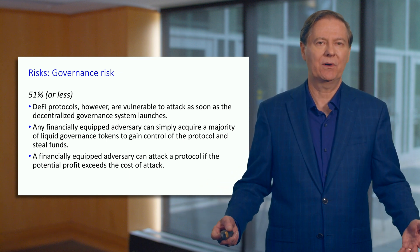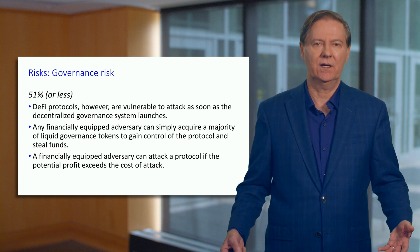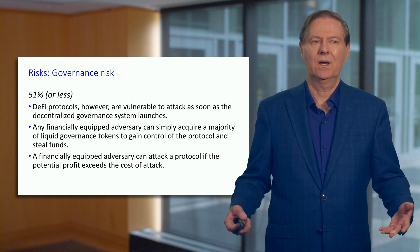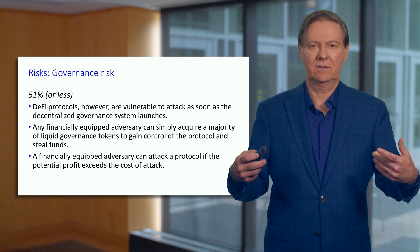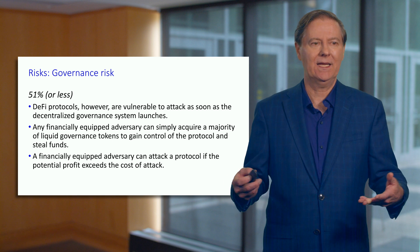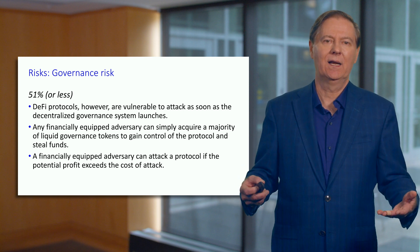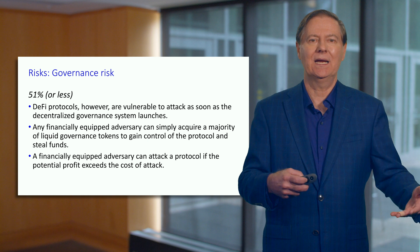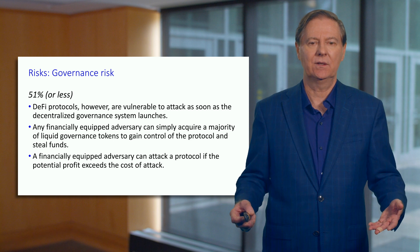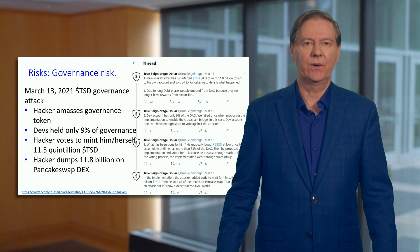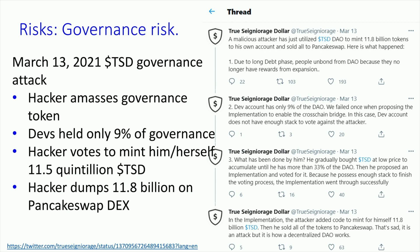For Bitcoin, if somebody grabbed 51%, people would lose all faith in it and it would plunge in value. So even if you had 51%, doing anything nefarious doesn't make sense — you spent all the resources to get there, you control it, but then it's worth nothing. You need to think of a way to actually monetize. These governance attacks hadn't happened until recently. I want to go through the details of an attack on True Senior Age Dollar, TSD.